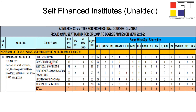Similarly, you can check for other branches as well. Before choice filling, go through this provisional seat matrix carefully, list out the branch or institute in which you want to get admission, and then start your choice filling process.